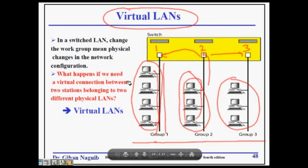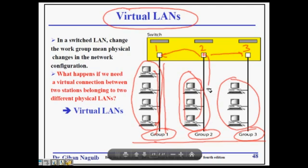Let's say this is any office — a software company — where we have group 1, group 2, and group 3. Group 1 only receives broadcast messages from its own group. Let's say this is the engineering group, so the engineering group only receives messages from engineering. This is the marketing group, so all marketing people receive messages from each other. No message goes from engineering to marketing.